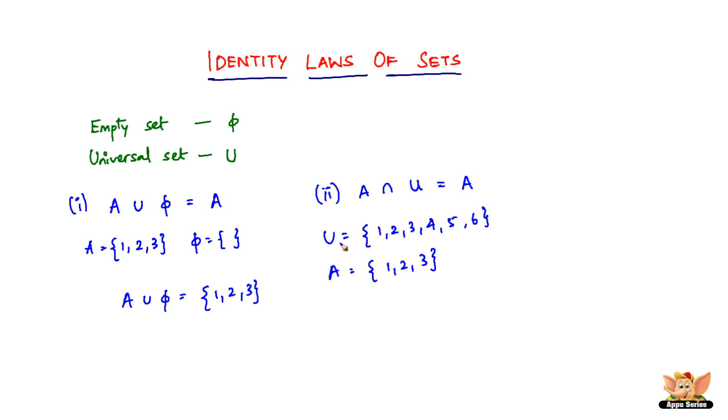If you do A ∩ U, the common elements between A and U are {1, 2, 3}, which equals A. That's why A intersection with the universal set is A.